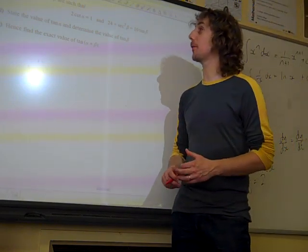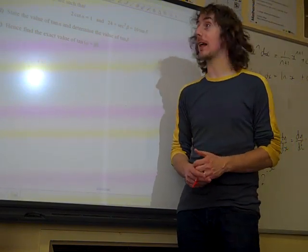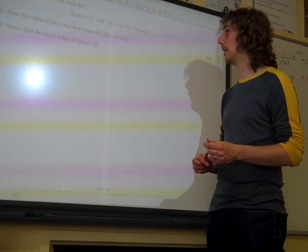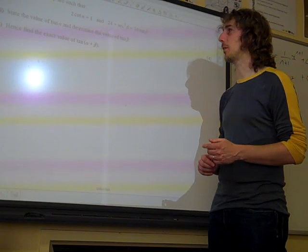The acute angles alpha and beta are such that 2 cot alpha is 1, and 24 plus sec squared beta equals 10 tan beta. State the value of tan alpha.